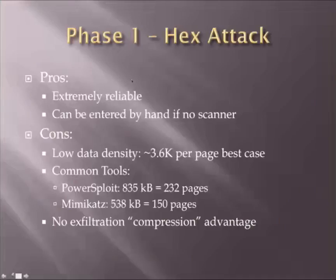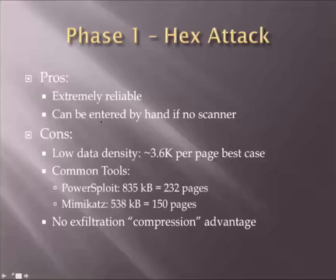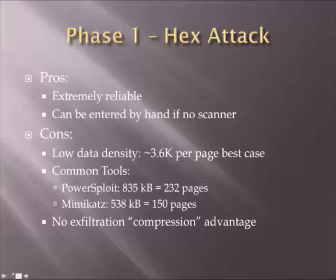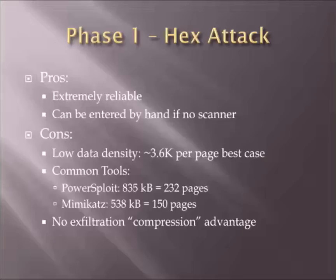The hex attack is really super reliable. You can get data very easily onto a machine and it won't fail. And if you really had to, you can enter it by hand — type in those hex lines. The bad part is it has low data density: about 3.6 kilobytes of data per page. Tools like PowerSploit and Mimikatz would take about 200 pages of data to scan at work, which would probably raise some flags. And there's no exfiltration compression advantage. I needed to do better.